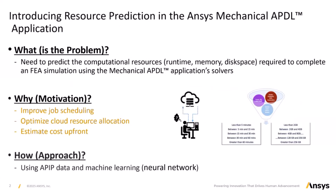The resource prediction tool forecasts computational resources such as runtime, memory, and disk space required for FEA simulations that use mechanical APDL solvers. Providing these estimates upfront before running a simulation gives several benefits. You can ensure optimal usage of your HPC resources by enhancing large cluster job scheduling, create cost-effective simulation runs by optimizing cloud resource allocation, and facilitate improvements in budgeting and planning by estimating the cost for cloud users.